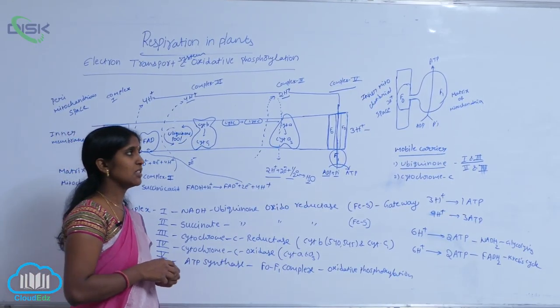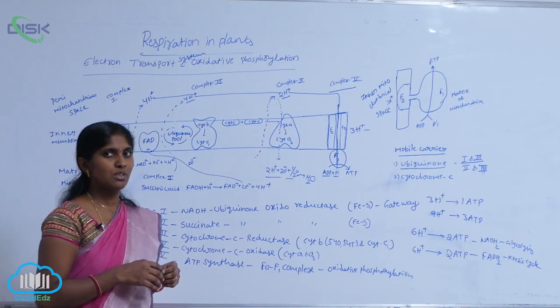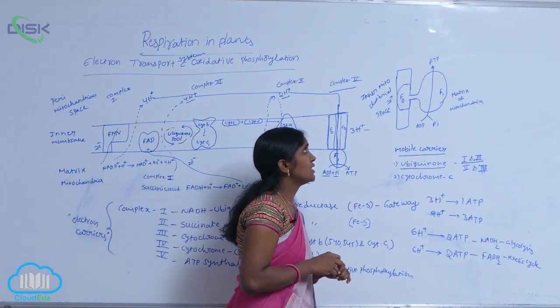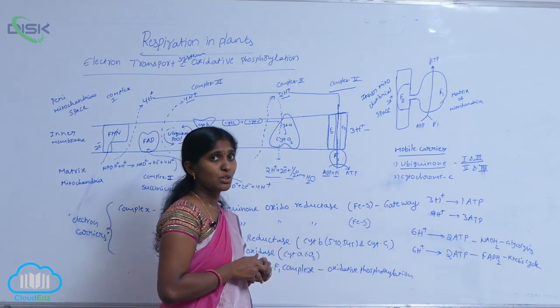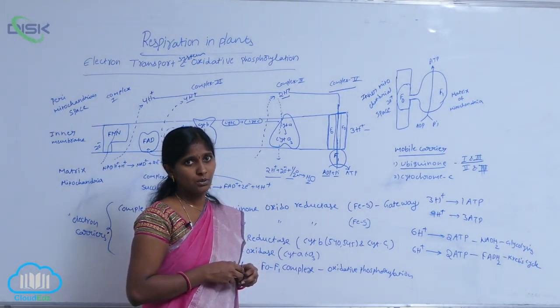It is a process for synthesis of ATP coupled with electron transport system. Here, ATP is synthesized in complex phi in the presence of ATPase. Two molecules are present: F0 and F1 granules.